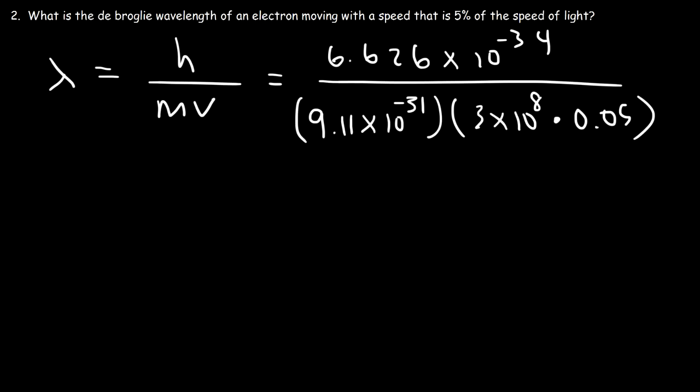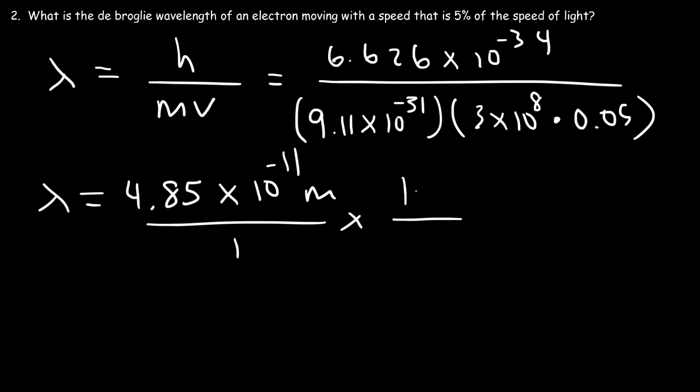Let's see what answer we get for this problem. You should get a wavelength of 4.85 times 10 to the minus 11 meters. This is a very small number, so converting to picometers — since one picometer is 10 to the minus 12 meters — that gives a wavelength of 48.5 picometers.